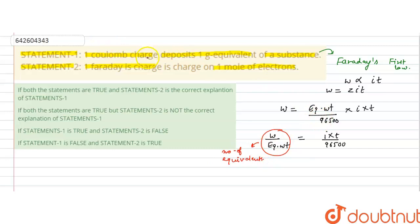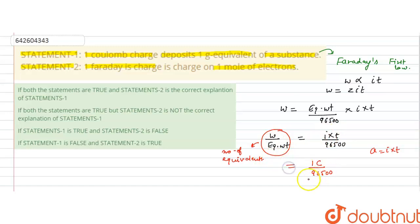One coulomb charge means current into time equals one coulomb. So the number of equivalents equals one coulomb divided by 96500. This means if charge is one coulomb, the amount of substance that deposits will be one upon 96500 gram equivalents — not one gram equivalent as stated. Therefore, statement one is false.